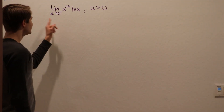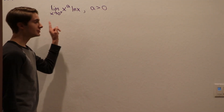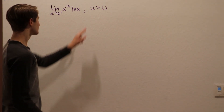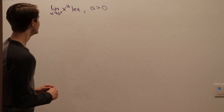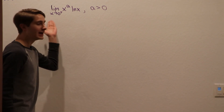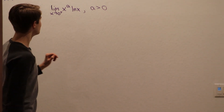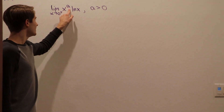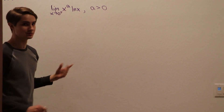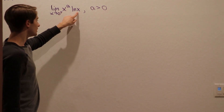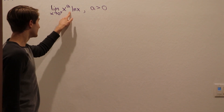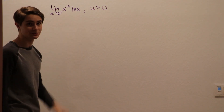We're going to find the limit as x approaches 0 from the right of x to the a times ln x, where a is greater than 0. To start off, let's see what happens if we just try to plug in x equals 0. We get 0 to the a, and since a is greater than 0, 0 to the a will just be 0. And then natural log of 0 will be negative infinity. So we have 0 times negative infinity.